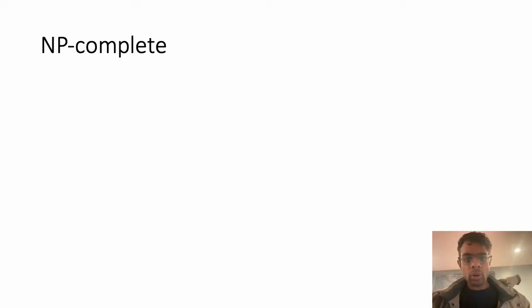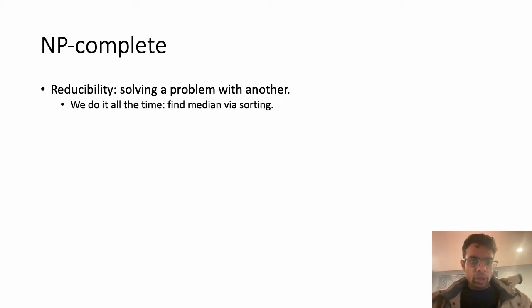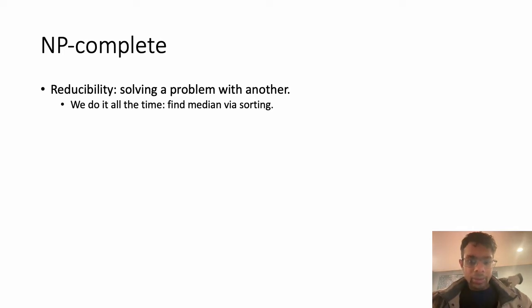The next important class is NP-complete. To understand it, we need the concept of reducibility: solving one problem with another by reducing an instance of the first problem to an instance of the second in polynomial time. If the second problem is solvable in polynomial time, the first is too. For example, to find the median of an array, we can call a sorting routine, sort the array, and pick the middle element — reducing the median problem to the sorting problem in constant time.